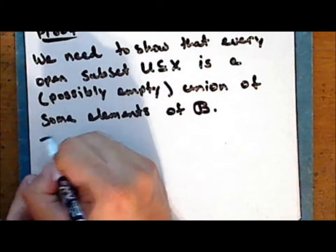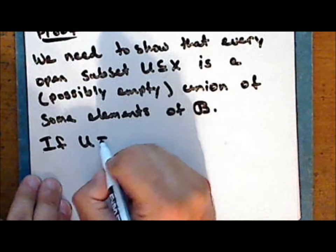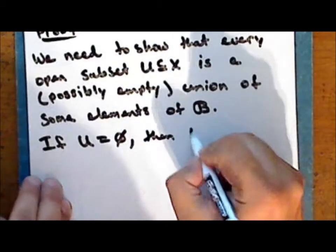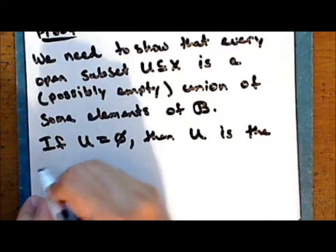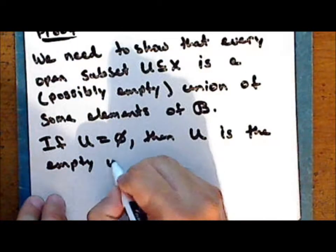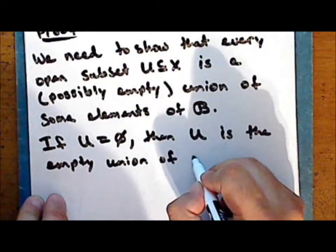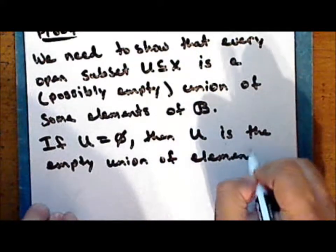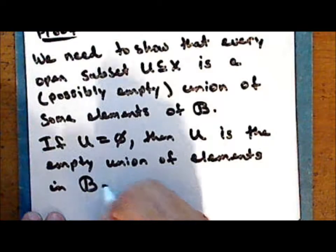If the subset U is the empty set, then U is the empty union of elements in the collection script B.